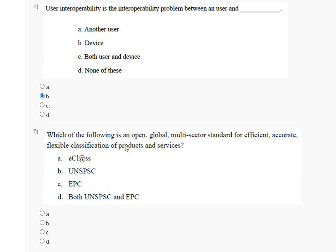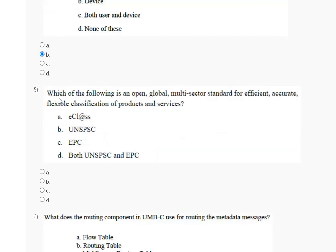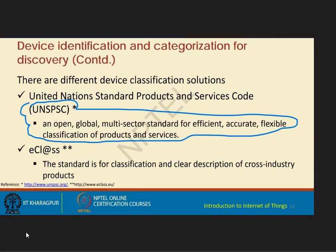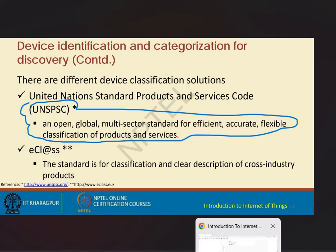Question number 5: which of the following is an open global multi-sector standard for efficient, accurate, flexible classification of products and services? The correct answer for question number 5 is option number B.